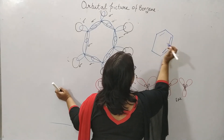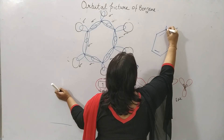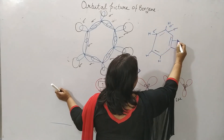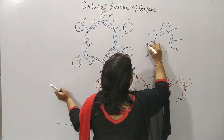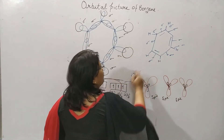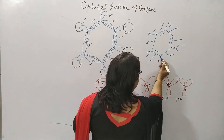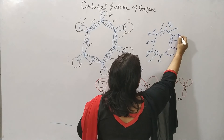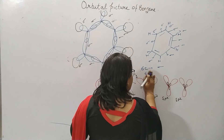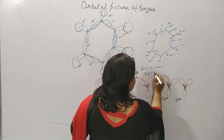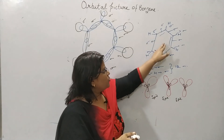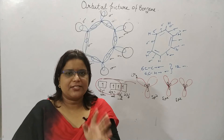Including the carbon-hydrogen sigma bonds, all single bonds in benzene are sigma bonds. In total, there are 12 sigma bonds present in the structure of benzene: 6 carbon-carbon sigma bonds and 6 carbon-hydrogen sigma bonds.